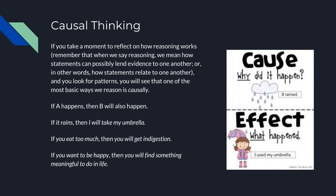When we talk about reasoning in this class, all we mean is we're wondering how one statement can possibly lend evidence to another statement — in other words, how statements are related to one another. So if A happens, then B will also happen. That's the core bit of causal reasoning.